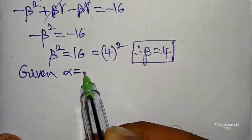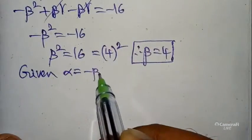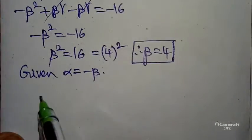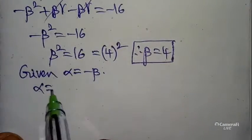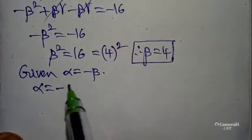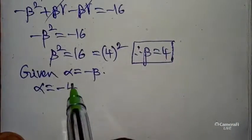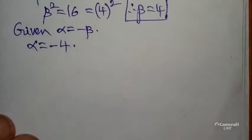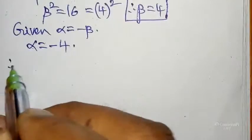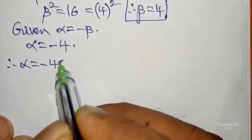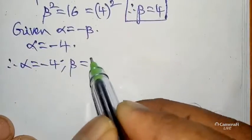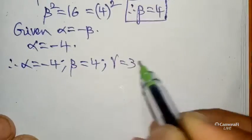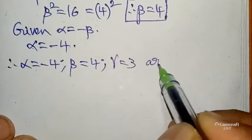From the condition alpha + beta = 0, we have alpha = -beta = -4. Therefore, alpha = -4, beta = 4, and gamma = 3 are the roots of the given equation.